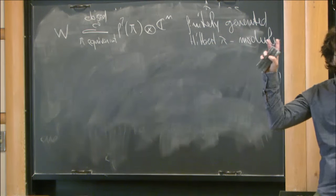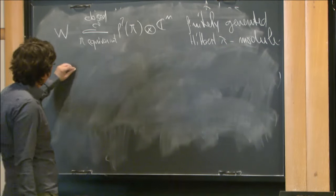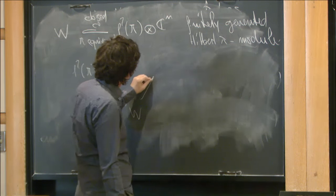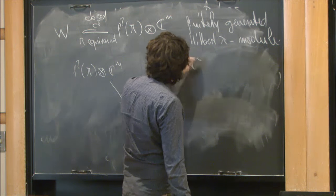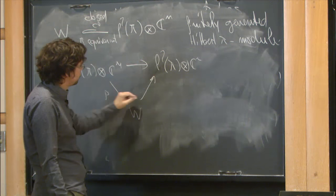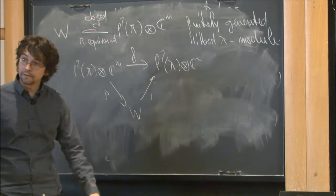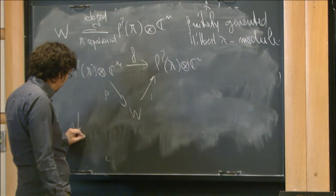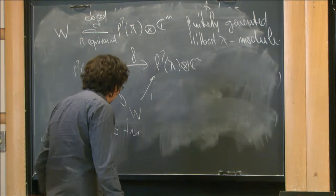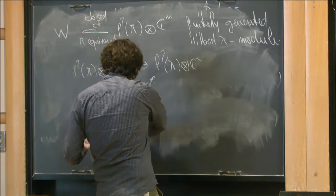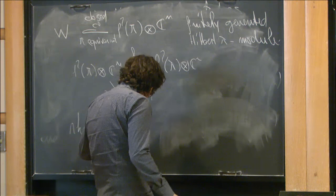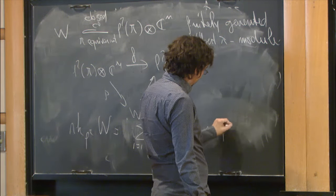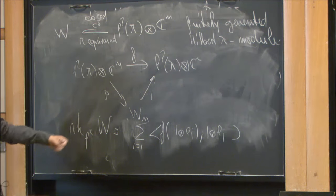To define the L² rank of a finitely generated Hilbert π-module W: since W is a closed subspace, I can project onto it and include back. The composition is a map f. In finite-dimensional vector spaces, the trace of this map is exactly the dimension of W. So I define the L² rank of W as the π-equivariant part of the trace: the sum from i=1 to n of ⟨f(1⊗aᵢ), 1⊗aᵢ⟩. This is a real (in fact positive) number.